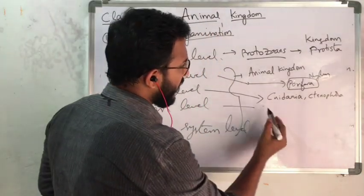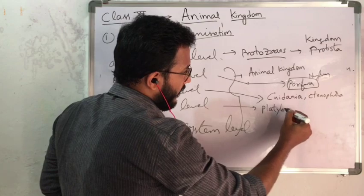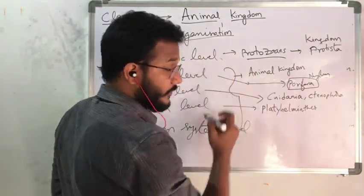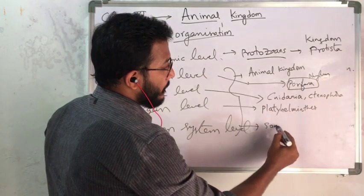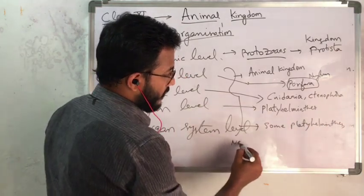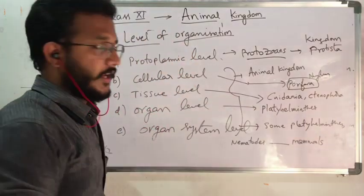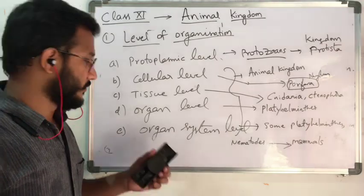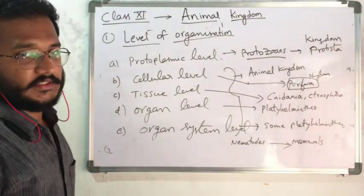Organ level of organization is exhibited by the phylum Platyhelminthes — here the group of tissues are combined together to form organ-like structures. And from some Platyhelminthes and nematodes to mammals — the most developed organisms in Kingdom Animalia — they exhibit organ system level, where all the organs performing the same function come together to form an organ system like the digestive system, respiratory system, or nervous system.